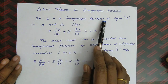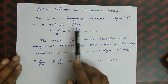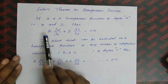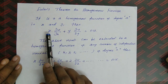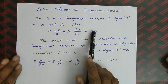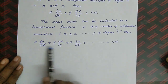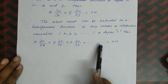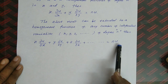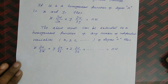To restate: if u is a homogeneous function, then x · ∂u/∂x + y · ∂u/∂y = n·u, where x and y are the two independent variables. This result extends to any number of independent variables.